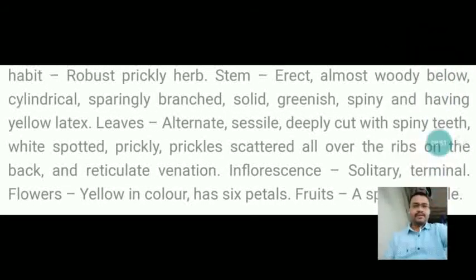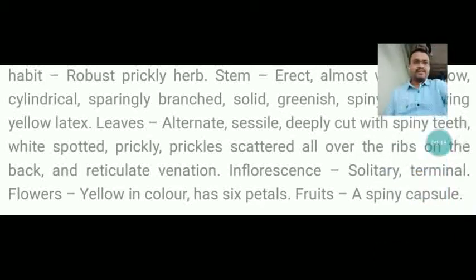Regarding the habit of the drug, it is a robust prickly herb. The stem is erect, almost woody below, cylindrical, sparingly branched, solid, greenish, spiny and having yellowish latex. Leaves are alternate, sessile, deeply cut with spiny teeth, white-spotted, prickly, with prickles scattered all over the ribs on the back and reticulate veining. Inflorescence is solitary and terminal. Flowers are yellow in color and have six petals. Fruits are spiny capsules.